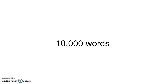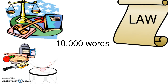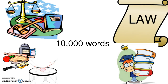Between 1250 and 1500 CE, almost 10,000 French words were borrowed into English. Most of these words were related to topics such as government, law, social life, or learning — ideas that applied to the upper class only, not the middle or lower classes. As a result, the lower classes did not have any words related to those ideas, and the words they then needed, they borrowed from the upper class people who already had the French words for them.